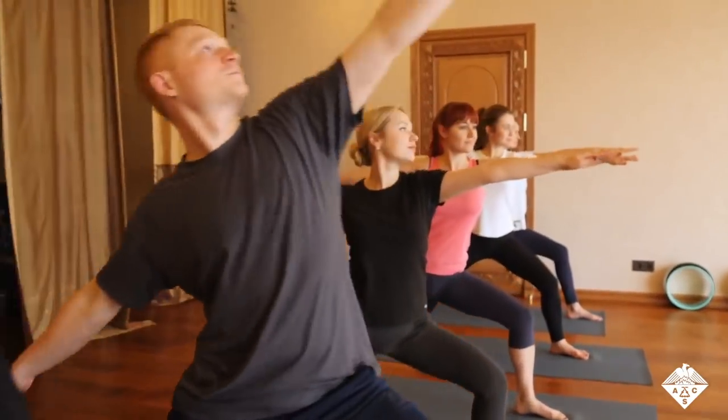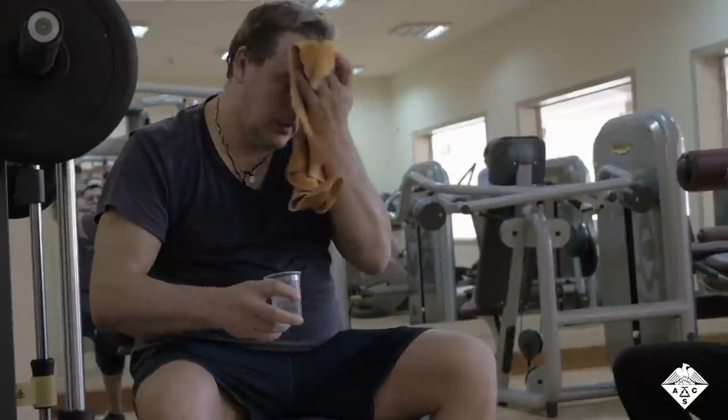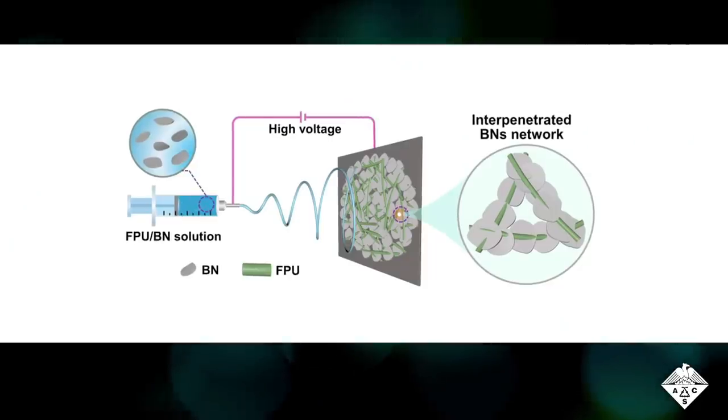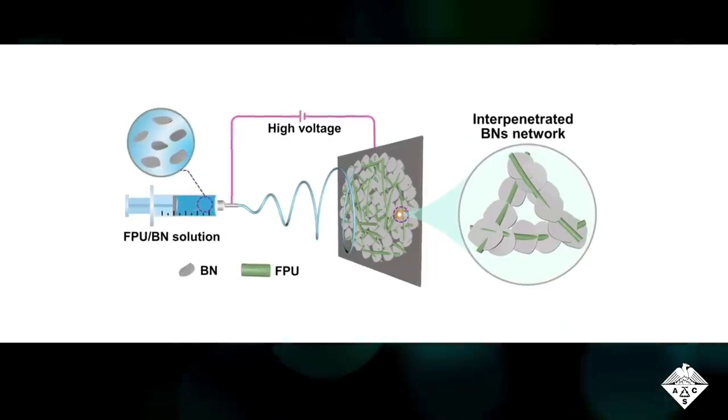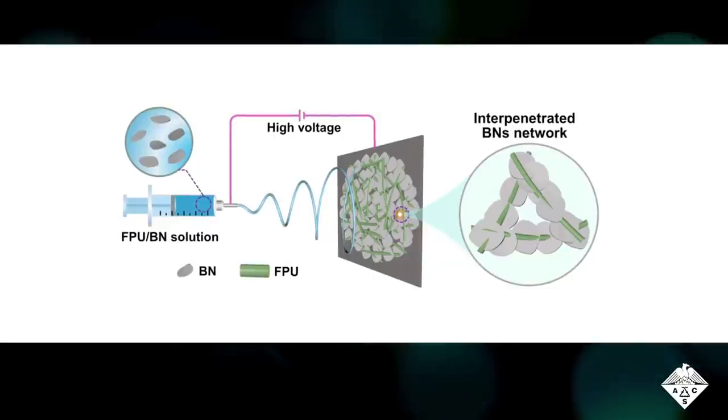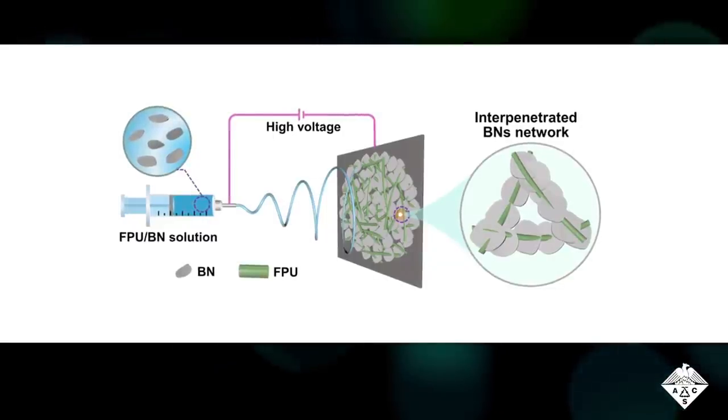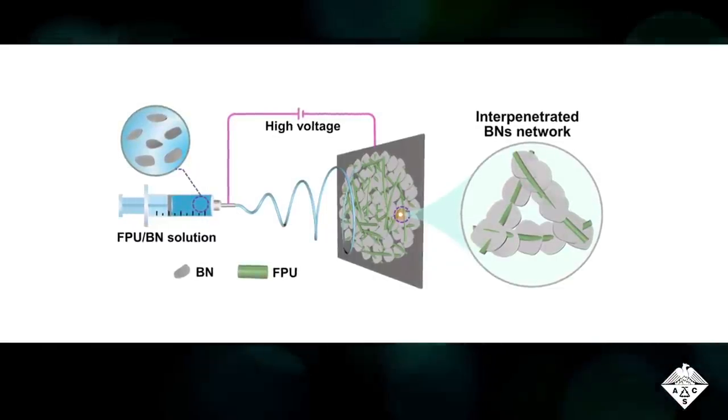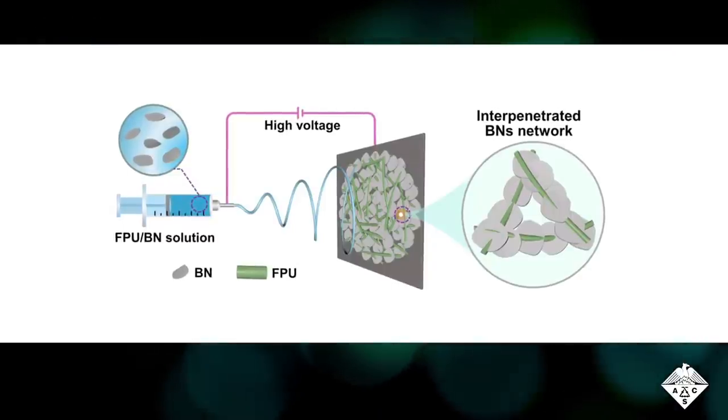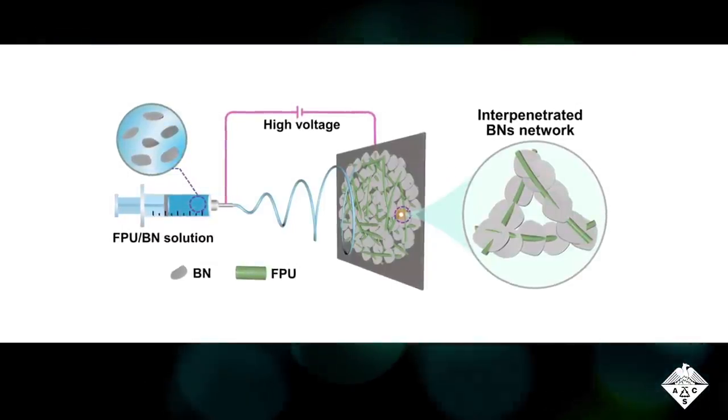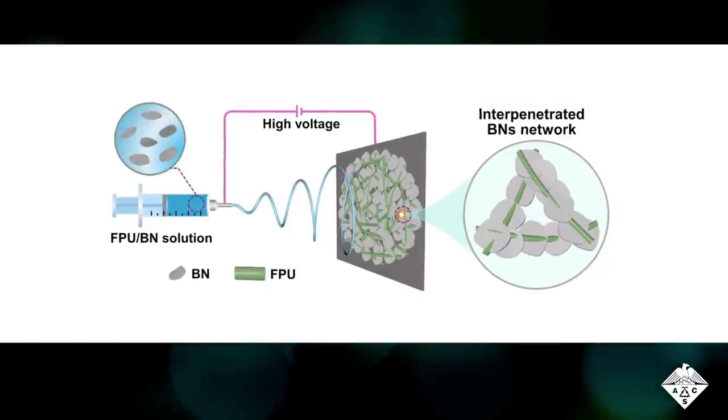Yang Si, Bin Ding, and colleagues wanted to develop a personal cooling fabric that could efficiently transfer heat away from the body while also being breathable, water-repellent, and easy to make. The researchers made the new material by electrospinning, a process that creates nanofibers by applying high voltages to a polymer solution as it's pumped from a syringe. In this case, the solution contained polyurethane, fluorinated polyurethane, and boron nitride nanosheets.